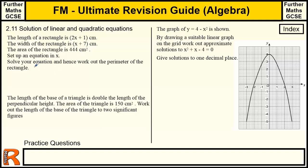So essentially we've got to solve this equation. We've got 2x plus 1 times x plus 7 equals 444. So we need to get this into a quadratic form. So we need to get this over to here. So we need to multiply all this out.